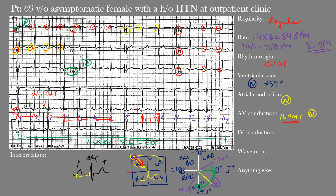For intraventricular conduction, we look at the duration of the QRS complexes. Normal QRS duration is between 70 and 110 milliseconds, or about two to three small boxes. The main thing we're checking for is whether the QRS interval is prolonged. We can see narrow QRS complexes here that appear within normal limits — the QRS duration is 80 milliseconds, confirming that intraventricular conduction is normal.